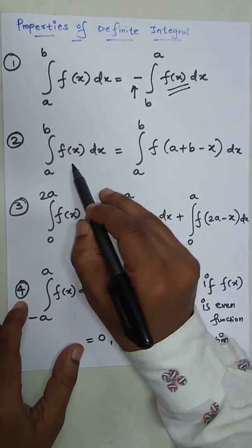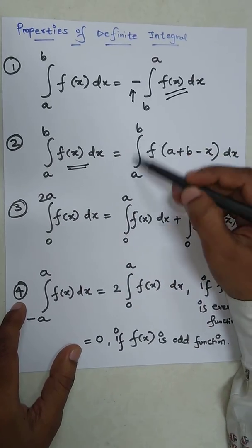Second property: a and b lower and upper limit, f of x dx. So this we can write as a b as it is.